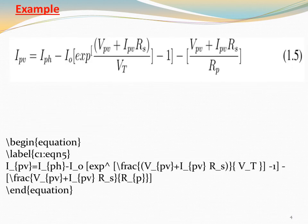Here start the equation and label it chapter 1, equation number 5, so 1.5. Now let's start the equation. I_pv equals I_ph minus I_0 with the exponential symbol using the hat symbol with square brackets, then \frac.